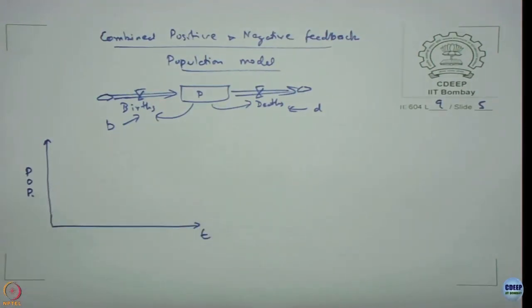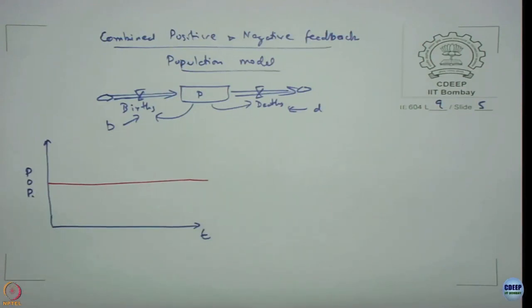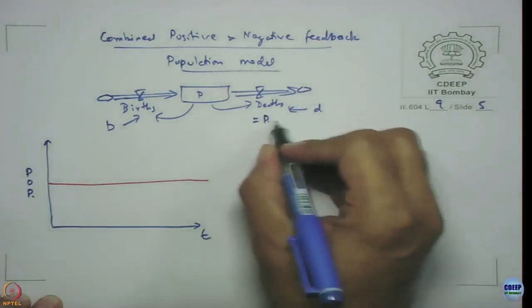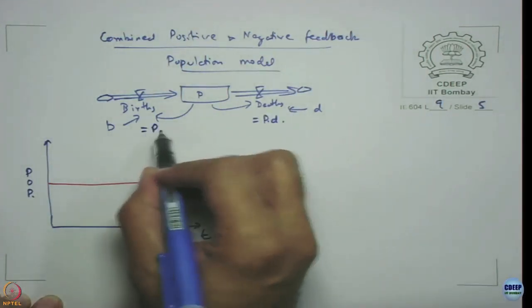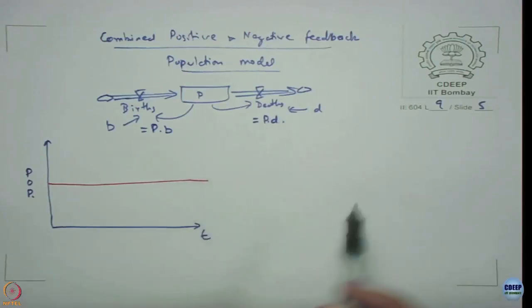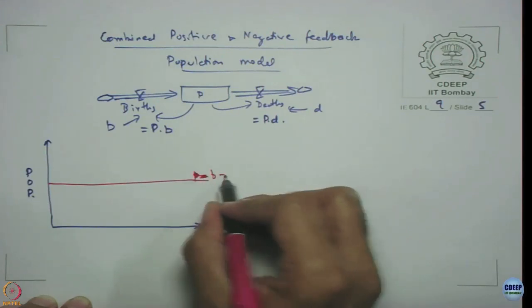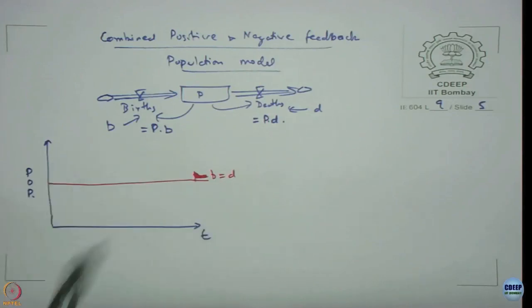If in steady state when births exactly equal deaths, then population will remain a constant. When will births be equal to deaths? Deaths is equal to P times D, births is equal to P times B. The equation of births is just P times B, the equation of deaths is P times D. In the system, if B is equal to D, then system is not going to oscillate or anything. System will always be in steady state.